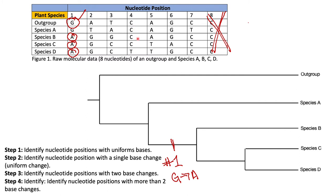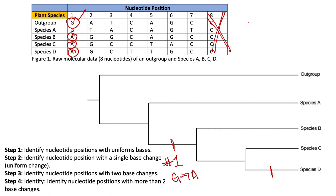Column four goes C, C, C, C to T. This is a uniform change — all were Cs and then it became a T — and only species D is affected. We plot this change on the branch leading only to species D. At nucleotide position four, we are going from C to T, comparing to the outgroup. Only species D is affected.